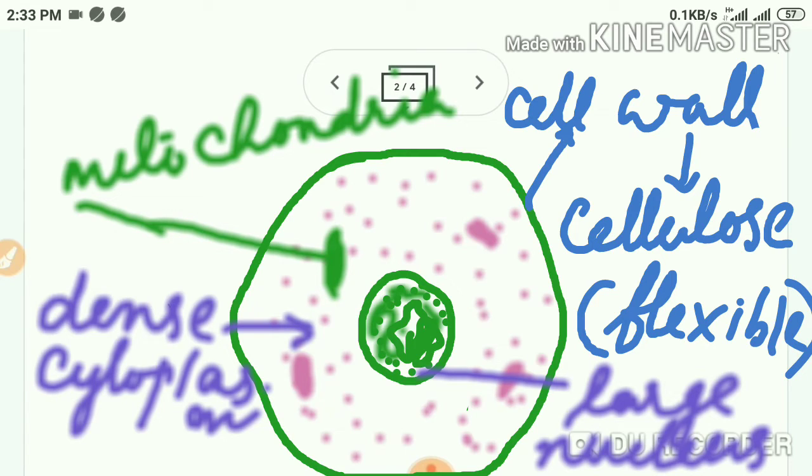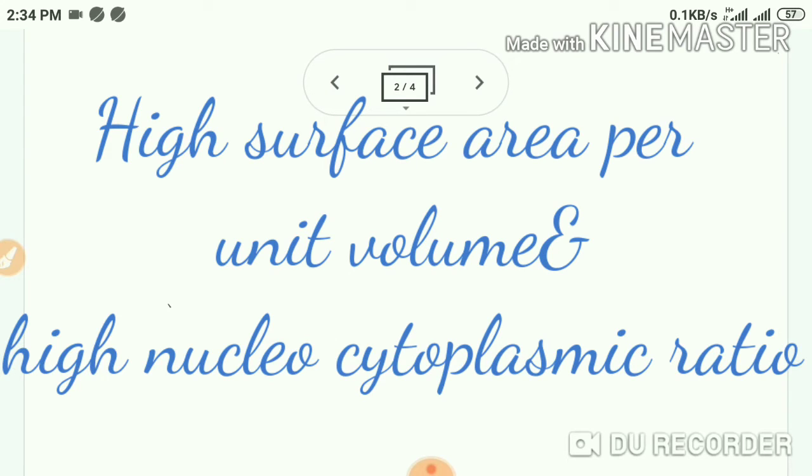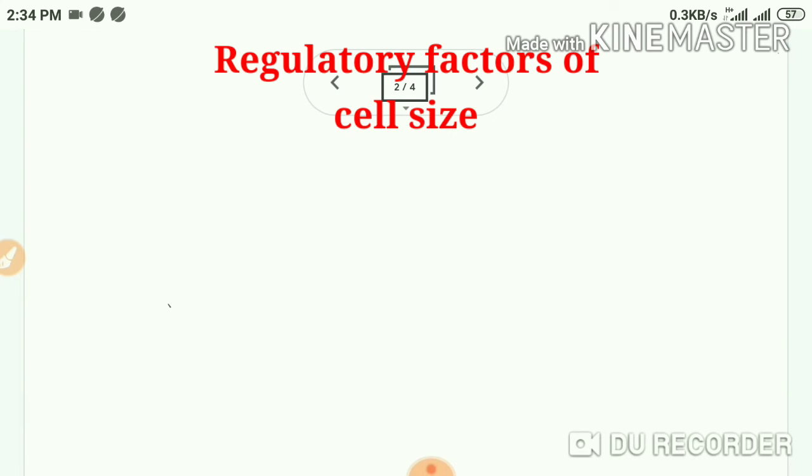All the above mentioned characters make cell metabolically active. The last characteristic feature is they have high surface area per unit volume and high nucleocytoplasmic ratio. These two terms might be unfamiliar to you. Don't worry. I will try to make you understand these points. We are going to discuss these points under another subheading. That is, the regulatory factors of cell size. Already we discussed about the size of the cell. I told you they are very small. And this small size is very important for the activeness of the cell. For the efficiency of the cell. How does the small size of the cell benefit?